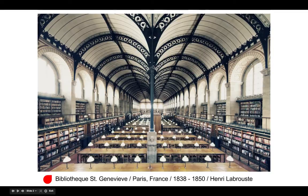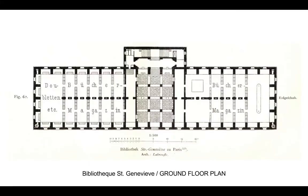His choice here of exposing the iron latticework was seen as really radical for this time. He even chooses to specifically paint it dark so that it's emphasized within the interior space. This contrast that he creates is a purposeful intent towards embracing a new building material — iron would be relatively new for this time — and having it stand out against this traditional masonry architecture.